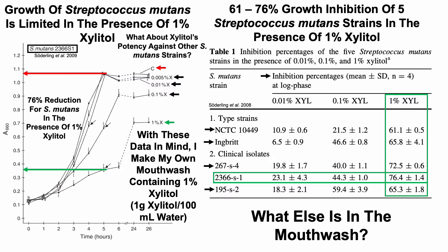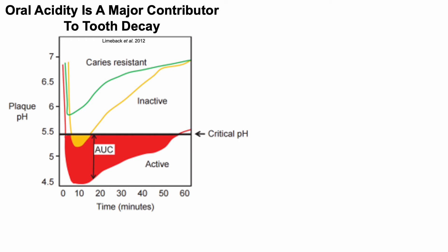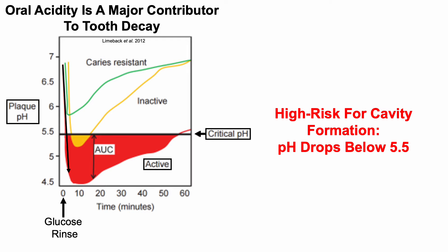This raises the question: what else is in the mouthwash? An increase in oral acidity is a major contributor to tooth decay. Looking at plaque pH as a function of time after a glucose rinse: for someone with active cavity formation, there's a rapid decline in plaque pH to below 5.5 — down to about 4.5. A pH below 5.5 is the critical threshold for high cavity formation risk, and that person spends significant time in that zone.